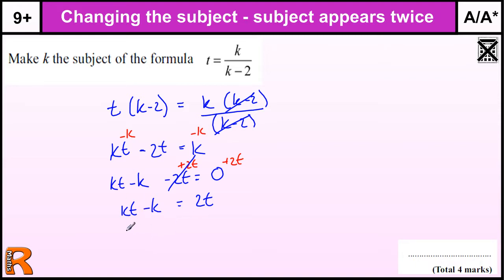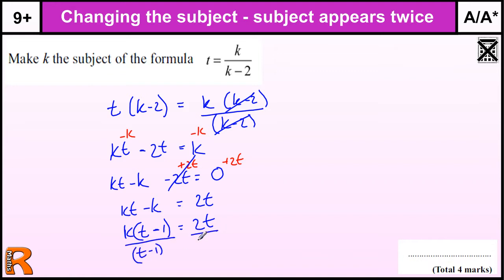I've got all the Ks together now, I just need to factorise them out. K goes into both terms: K lots of T, and what do I times K by to get minus K? That's minus 1. So I get K(T minus 1), and then I can divide by the bracket T minus 1 on both sides, which tells me that K equals 2T over T minus 1.